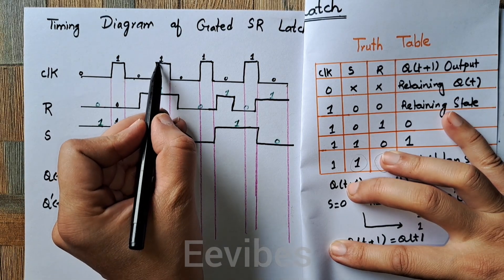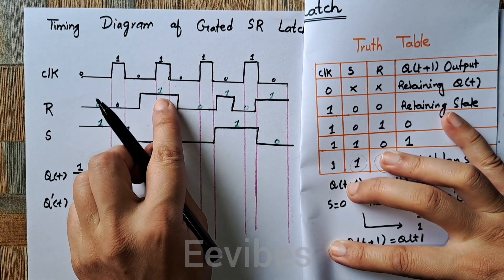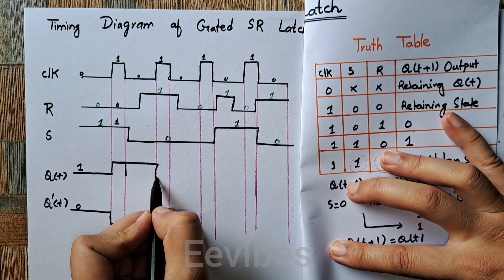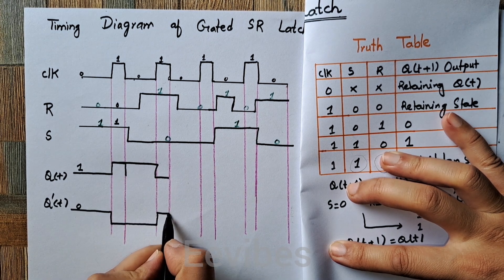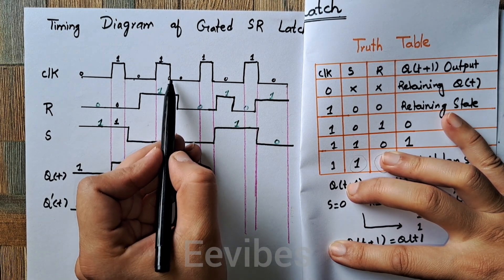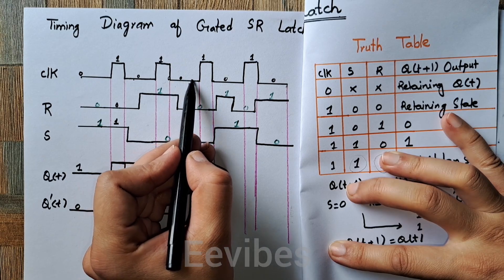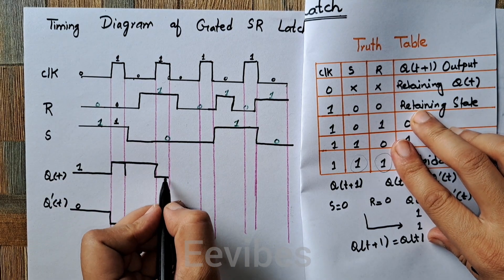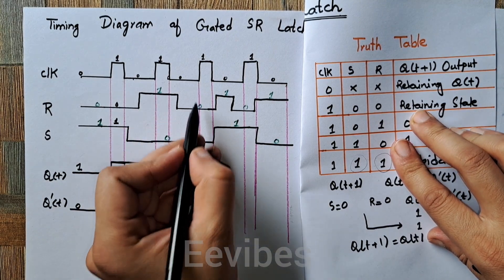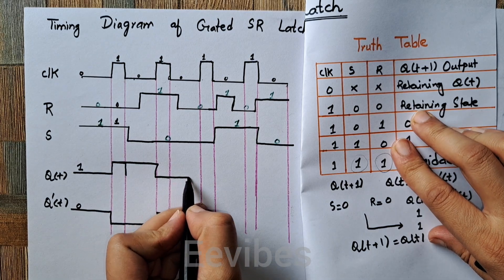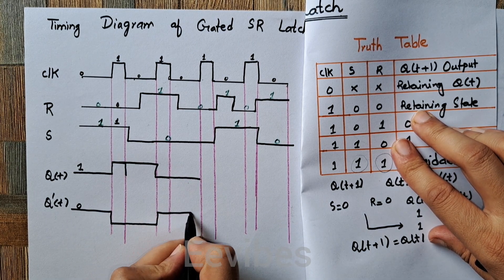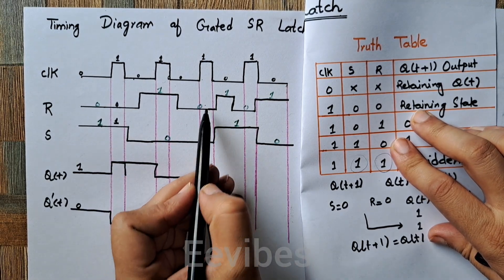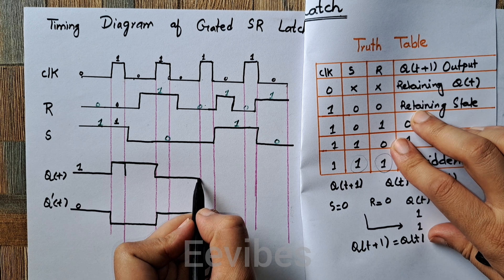When the clock signal becomes one again, R=1 and S=0, so the output is reset — it switches to zero while Q-complement becomes one. After this interval the clock switches to zero, so again with a zero-zero input it remains in the retaining state: Q remains zero and Q-complement remains one until the clock becomes one again. When clock becomes one with R=0 and S=0, it remains in the retaining state.